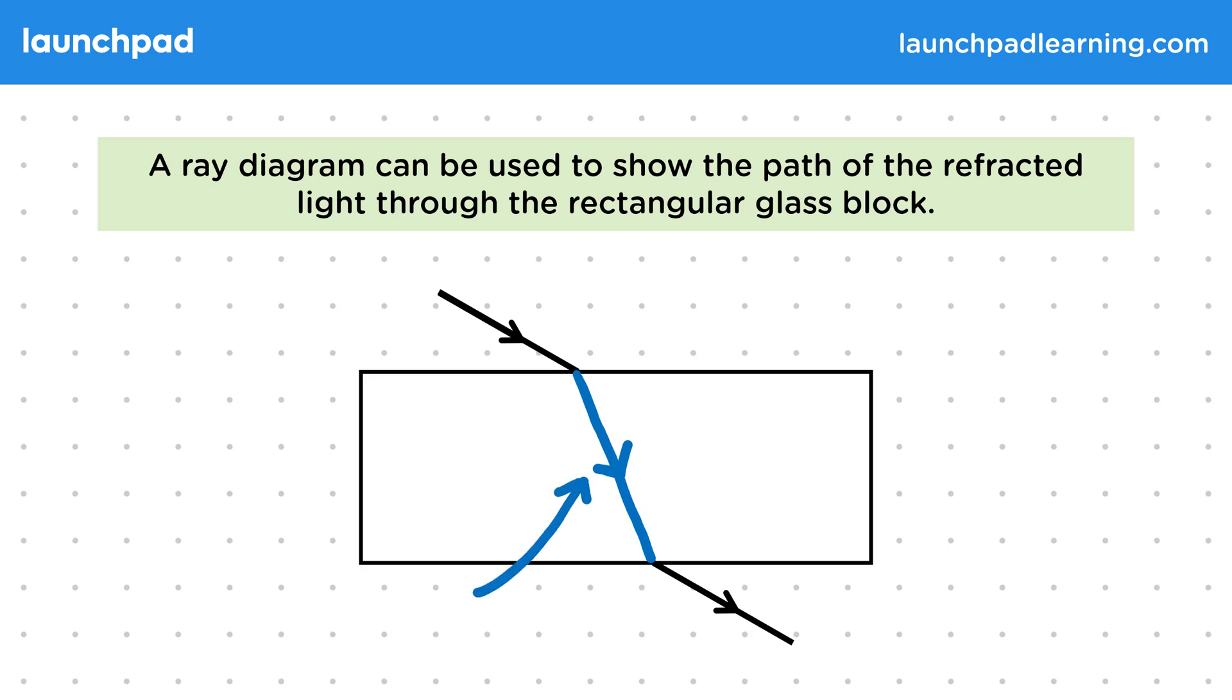This is the path of the ray inside the glass. We can also use this diagram to understand how the path is changing.